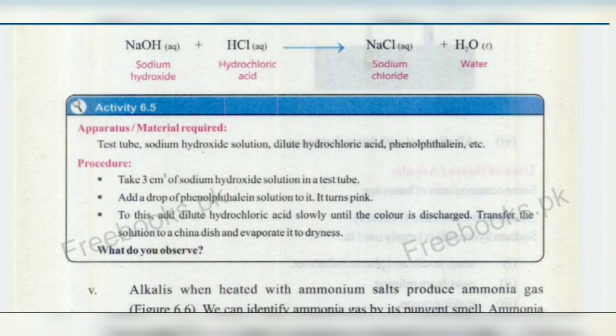Coming back to our topic: if your temperature changes from T1 to T2 and the volume changes from V1 to V2, then the first equation will be V1 over T1 equals K and the second will be V2 over T2 equals K. As both are equal to K, it means V1 over T1 is equal to V2 over T2.